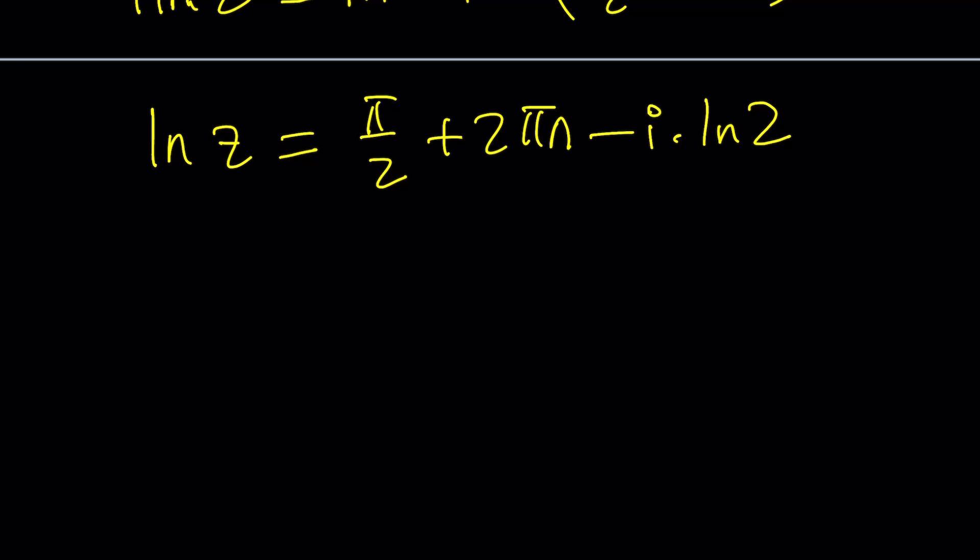We're almost there, but not quite because this is LNZ. We do need Z, right? And Z is what? E to the power LNZ, which is equal to E to the power pi over 2 plus 2 pi N minus I times LN2.